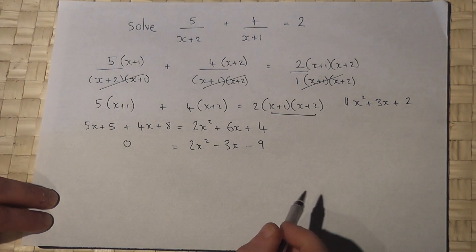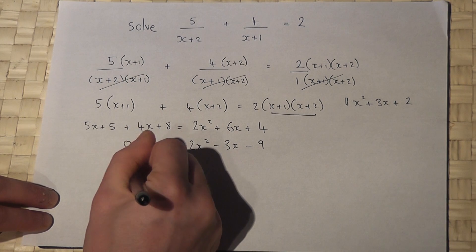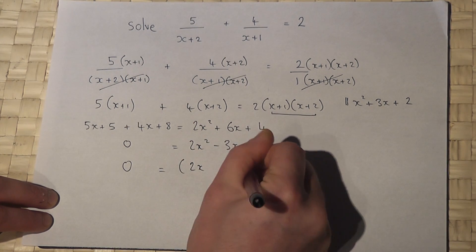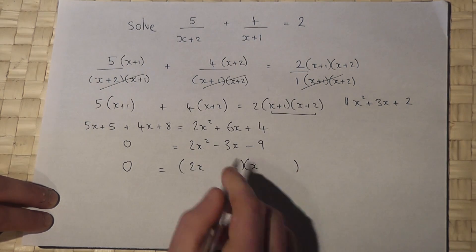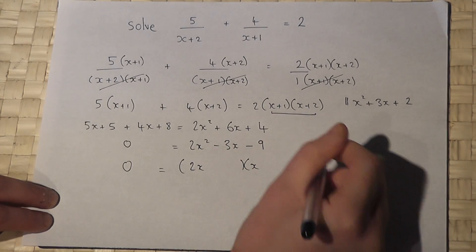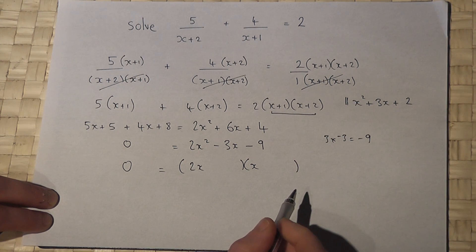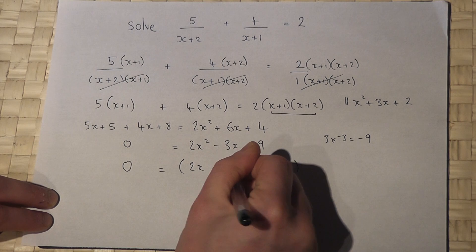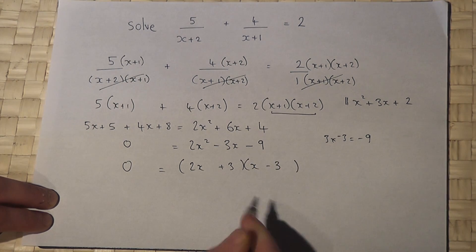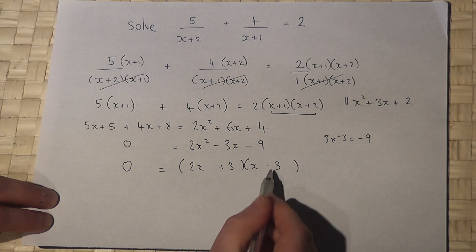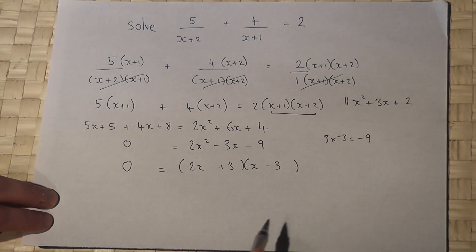Then, to solve this equation, I'll try and factorise it. So 2x squared, I need a 2x and an x, and to get a minus 9 is probably a plus 3 and a minus 3. 3 times minus 3 is minus 9. And if I put the plus 3 here and the minus 3 here, 3 times minus 3 is minus 9, but 3x take away 6x is minus 3x.